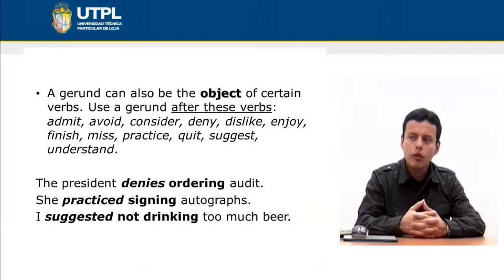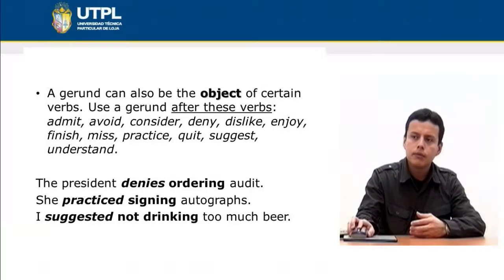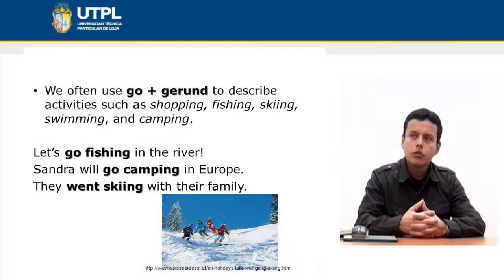In the second case, after the verb 'practice,' we use the gerund 'signing': 'practice signing autographs.' In the third case, after the verb 'suggest,' we use the gerund 'drinking' in its negative form: 'I suggested not drinking too much beer.' In all three cases, the gerund is the object of the verb.